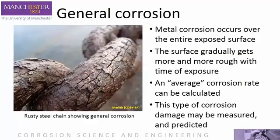General corrosion is the most familiar form of corrosion, where corrosion occurs over the entire surface while it gradually gets more and more rough. This type of corrosion can be measured as an average corrosion rate and allows lifetimes to be predicted and corrosion allowances to be calculated.